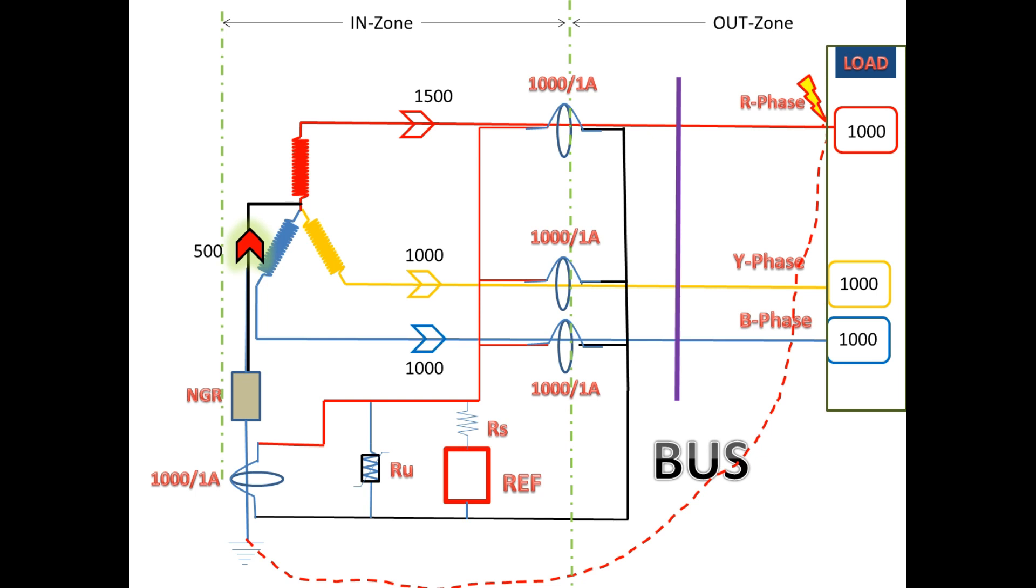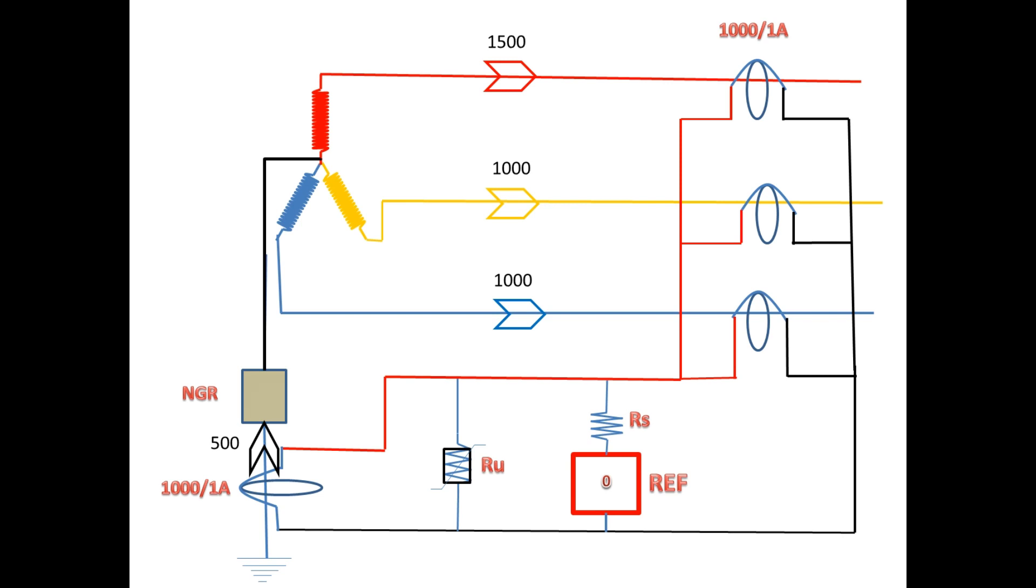R phase will take 1500 amps while the remaining phases will take 1000 amps each. Since it is an earth fault, the current path goes towards the neutral earthing point, so the neutral CT also gets 500 amps. Now for the secondary current: on the core balance CT, according to the CT ratio, R phase secondary current is 1.5 amps and the other two phases get 1 amp each.